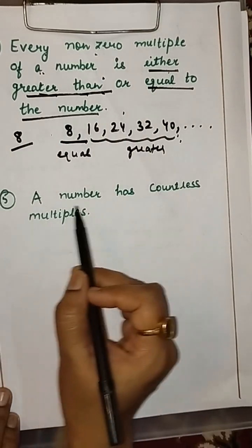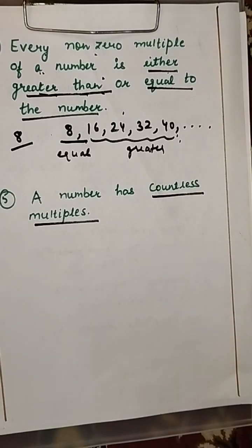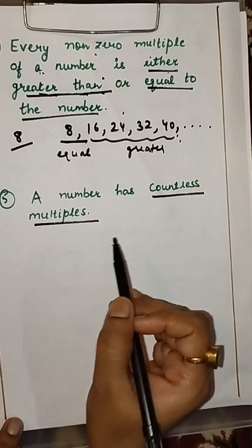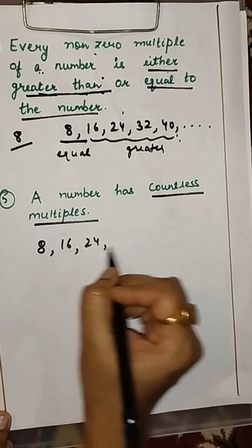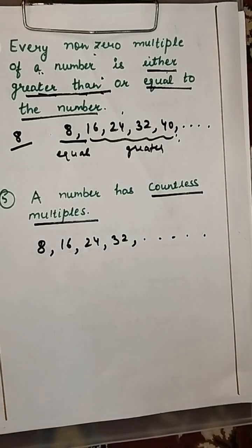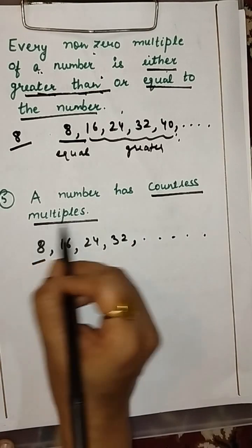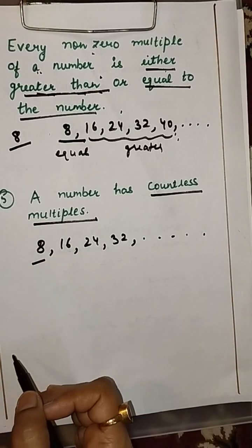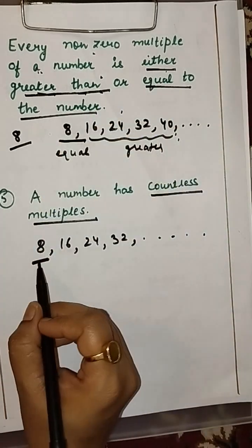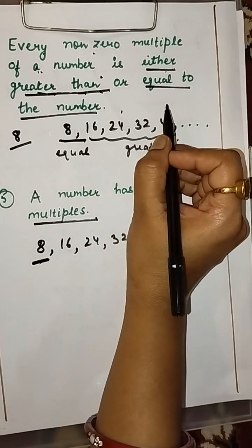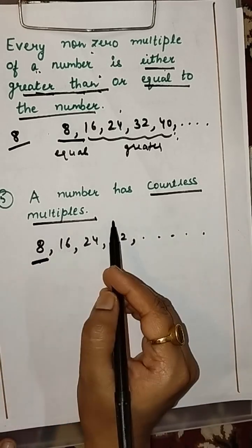Fifth property: a number has countless multiples — that is, infinite multiples. For example, multiples of 8 are 8, 16, 24, 32, and this goes on. We cannot count all the multiples of a given number. We know the smallest non-zero multiple is the number itself, and all others are greater. A number has countless multiples.